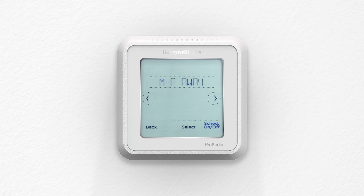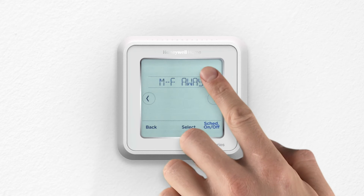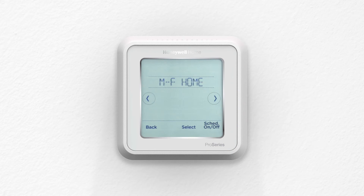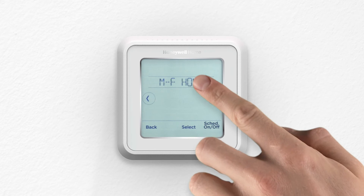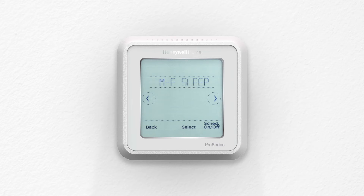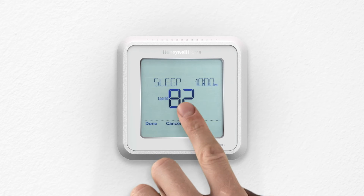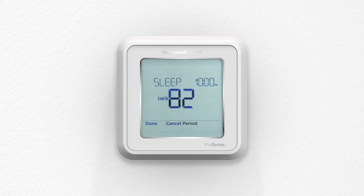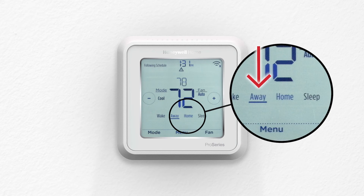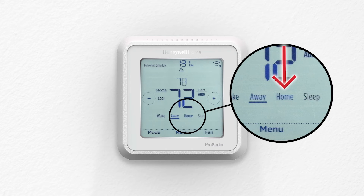Follow these same steps to set your schedule for the rest of the periods for Monday through Friday and Saturday through Sunday. You'll use Away for when you're typically away from home, Home for when you're normally home, and Sleep for when you go to bed.